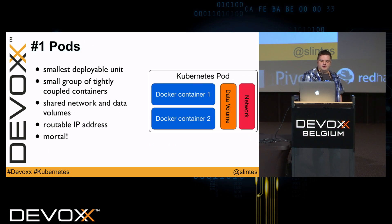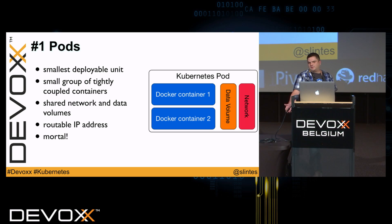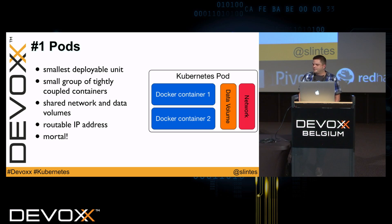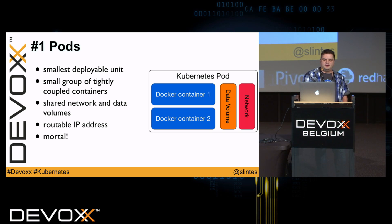Let's start with the first feature of Kubernetes. The smallest deployable unit is a pod. A pod is a small group of tightly coupled containers which share network and data volumes — most times you even have only one container in a pod. Shared network means containers can communicate with each other over localhost and share files in volumes. Every pod gets a routable IP, but pods are mortal — they can be restarted on another node and then get a new IP address.